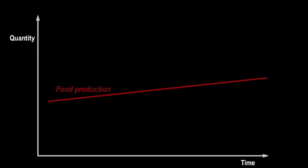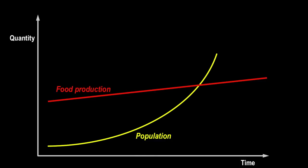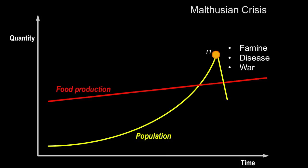In short, Malthus's theory predicts that when food production increases over time to meet demand, the population will grow faster and exceed the food or resource-producing capacity, and the growth is checked in the end by famine, disease, and war — something called a Malthusian crisis.